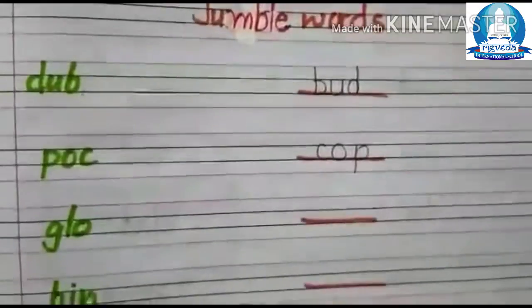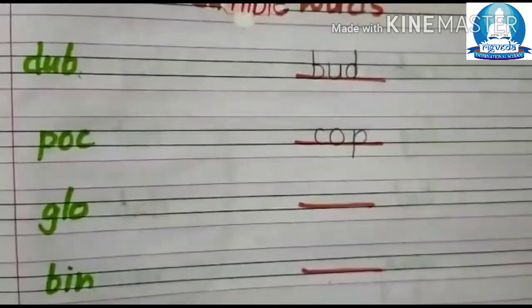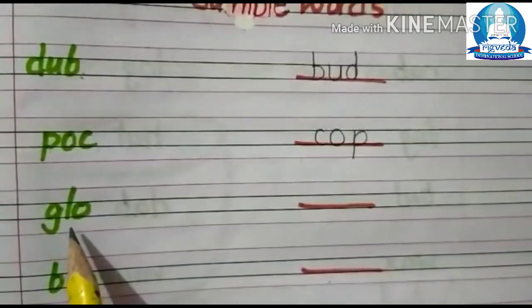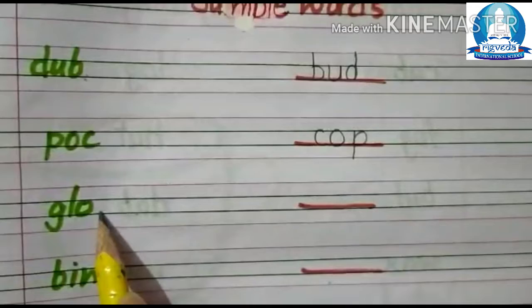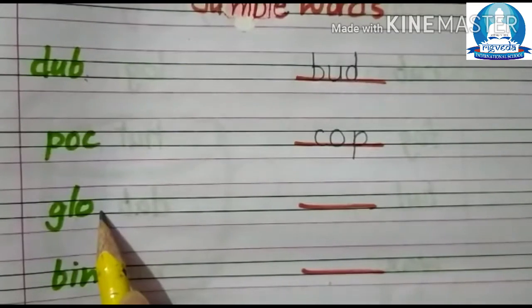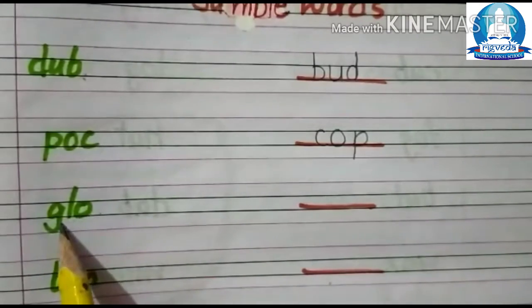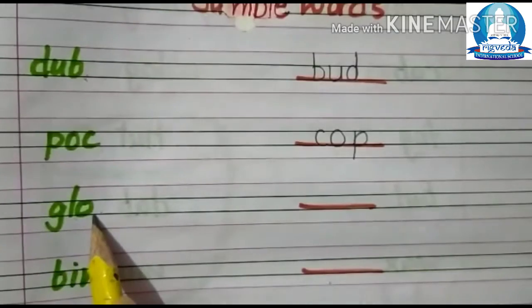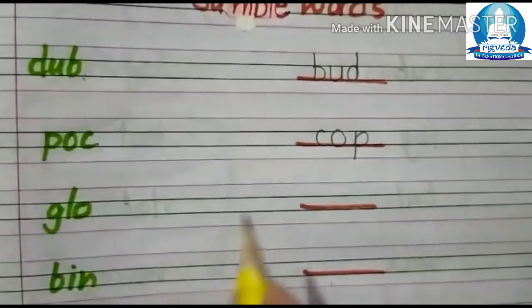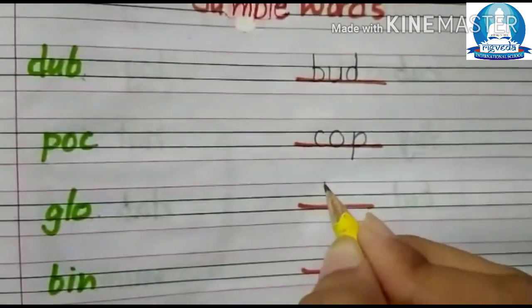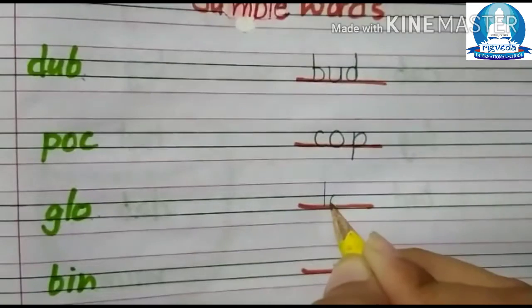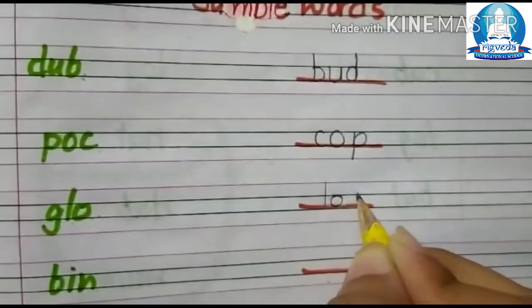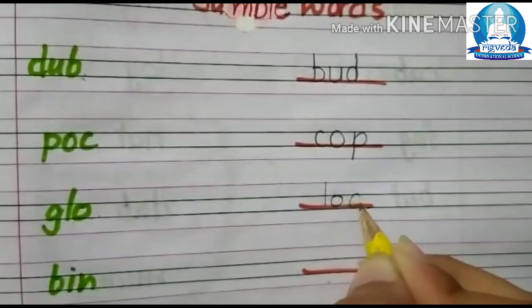Next is G, L, O. What we will make from G, L, O? Log. L, O, G.